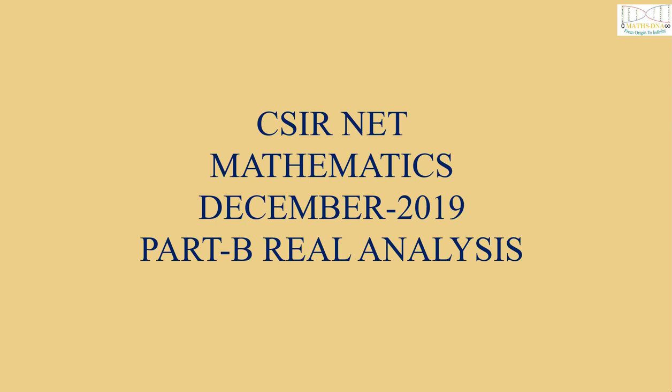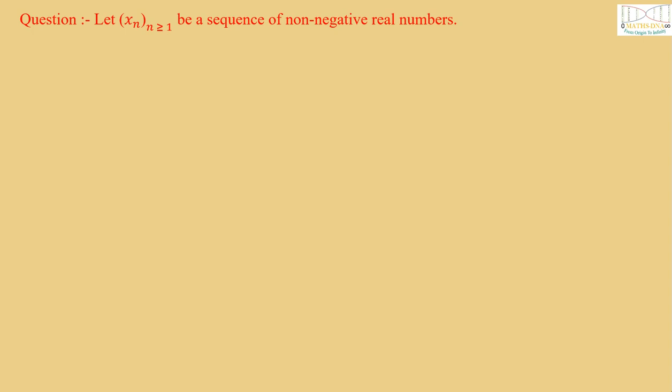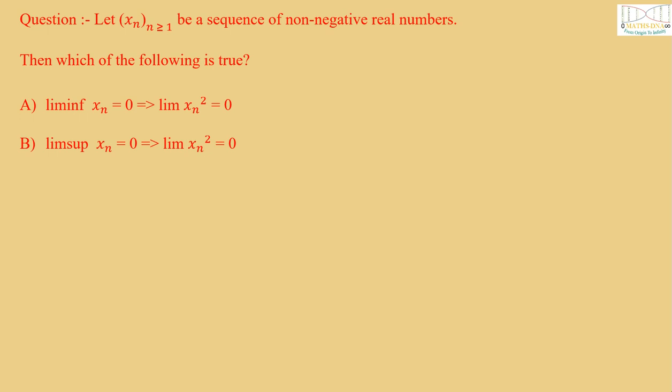Today we are going to solve a question of CSIR-NET mathematics December 2019 Part B Real Analysis. The question is: let Xn for n greater than or equal to 1 be a sequence of non-negative real numbers. Then which of the following is true? Option A: limit infimum Xn = 0 implies limit Xn² = 0. Option B: limit supremum Xn = 0 implies limit Xn² = 0. Option C: limit infimum Xn = 0 implies Xn is bounded. Option D: limit infimum Xn² > 4 implies limit supremum Xn > 4.